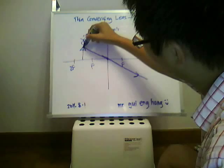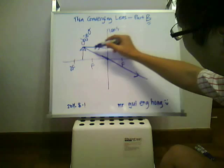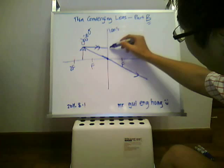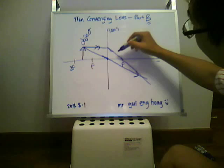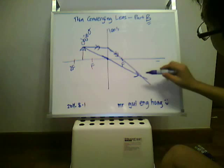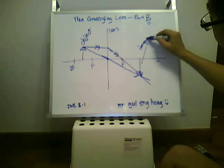The second ray is drawn parallel to the principal axis. After this ray goes parallel to the principal axis, it will pass through the lens and cut the focal point, then it goes in a straight line. Using a ruler, draw a straight line. Now where the two rays cut each other, this is the position of the image, and we call this the image.